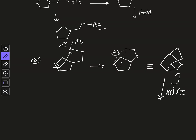The product you will get has the OAc group, and on this side you have a three-carbon framework — one, two, three carbon atoms. That is the product of the reaction from compound A. Looking carefully at the structure, it will look like this drawn product.